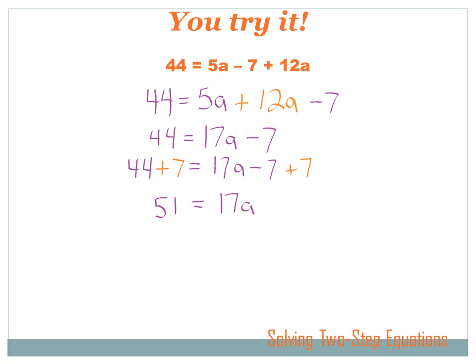And I probably want to attack the addition or the subtraction first. So let's get rid of that minus 7. To get rid of the minus 7, I do the opposite. I add 7. And if I'm going to add 7 to the right side, I better add 7 to the left side. So now I've got 44 plus 7, which equals 51. And I've got 17a minus 7 plus 7, which equals 17a.